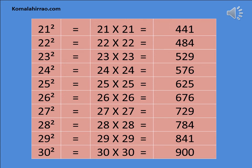26 square is equal to 26 x 26 is equal to 676. 27 square is equal to 27 x 27 is equal to 729. 28 square is equal to 28 x 28 is equal to 784. 29 square is equal to 29 x 29 is equal to 841. 30 square is equal to 30 x 30 is equal to 900.